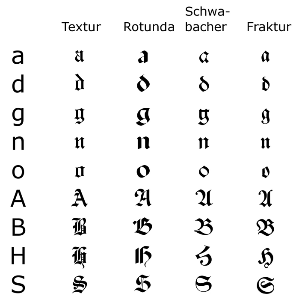In Unicode, Fraktur is treated as a font of the Latin alphabet and is not encoded separately. The additional ligatures that are required for Fraktur fonts will not be encoded in Unicode. Instead, Unicode proposes to deal with these ligatures using smart font technologies such as OpenType, AAT, or Graphite. There are many Fraktur fonts that do not use smart font technologies, but use their own legacy encoding instead, which is not compliant with Unicode.